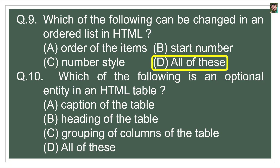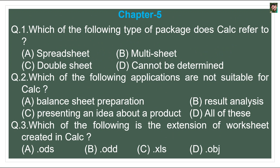Question 10: What is an optional entity in an HTML table? The caption, heading, and grouping of columns are all optional — nothing is compulsory in an HTML table. It is not compulsory to give a caption, not compulsory to give a heading, and not compulsory to group columns. All three options are optional when creating an HTML table.